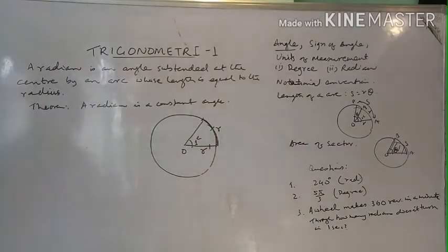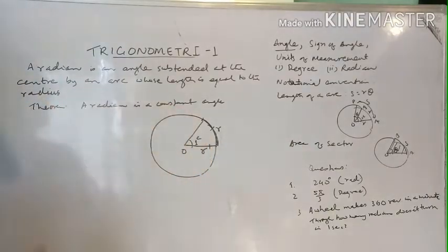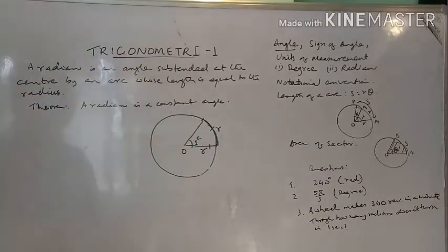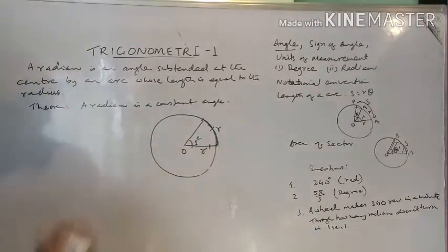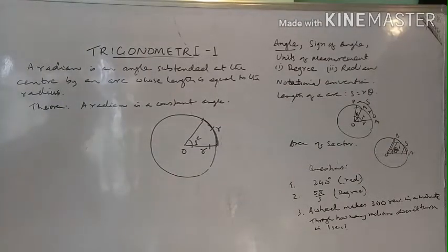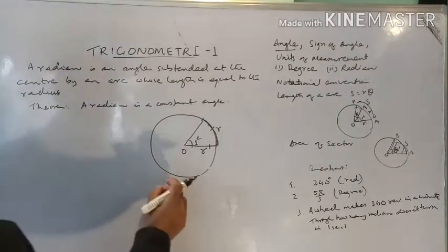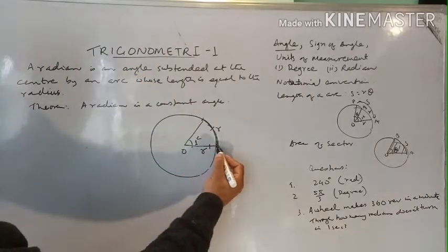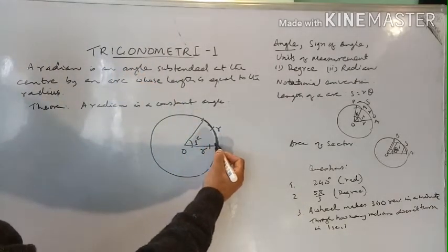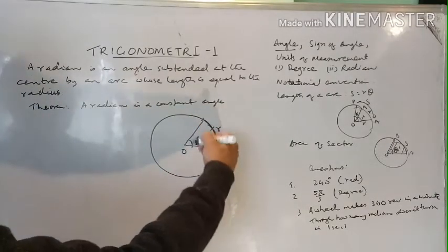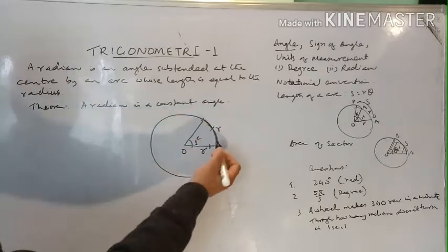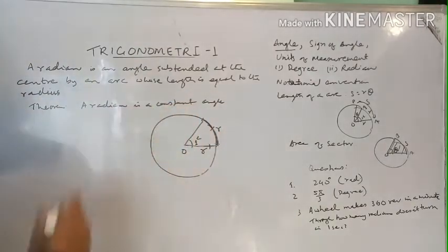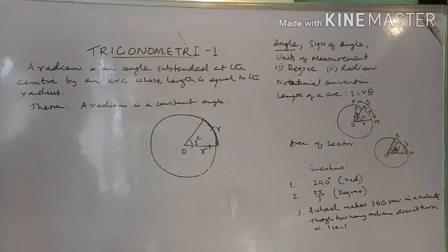We write a small superscript 'c' as the symbol for radian, just like degree. Normally, if you don't write a degree symbol and just write a number, it is understood to be radian measure. Whenever the radius of the circle equals the arc length, the angle subtended by that arc at the center is one radian.